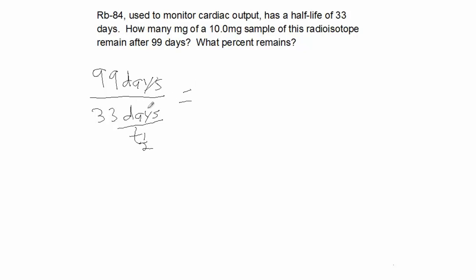33 days per one half-life. I do the math on the units, and I see that the half-life units will come up to the numerator. The math on the numbers is three. So that means I've gone through three half-lives in 99 days.